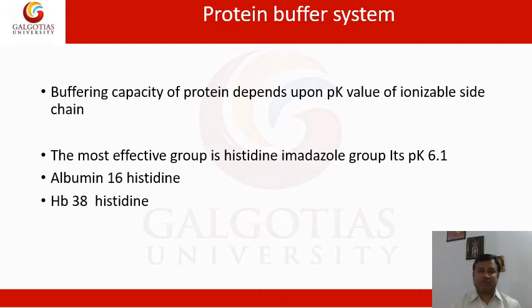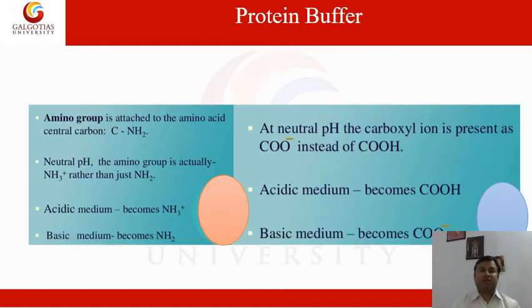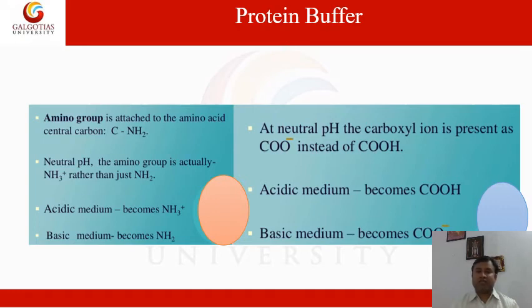The protein buffer system's buffering capacity depends upon the pK value of ionizable side chains. The most effective group is the histidine imidazole group with pK 6.1. In albumin, 16 histidine residues are responsible, while in hemoglobin 38 histidine residues are responsible for the protein buffer. Protein buffer depends upon the amino group and carboxyl group present in the protein. At neutral pH, the amino group is NH3+ and the carboxyl group is COO−. In acidic medium, the amino group becomes NH3+ and carboxyl becomes COOH; in basic medium, the amino group becomes NH2 and carboxyl remains COO−.